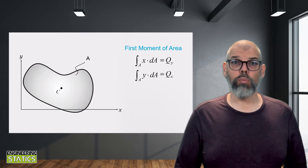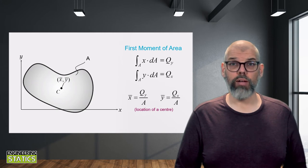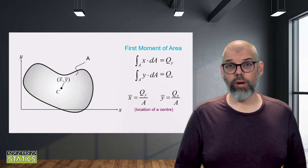We can use these moments of area to calculate the location of the centroid for a shape with respect to a reference xy coordinate frame by dividing the first moments of area calculated with respect to this reference frame by the area of the shape.